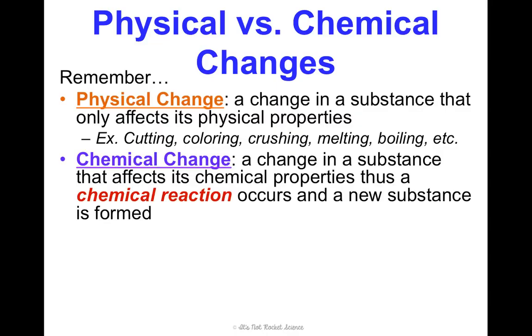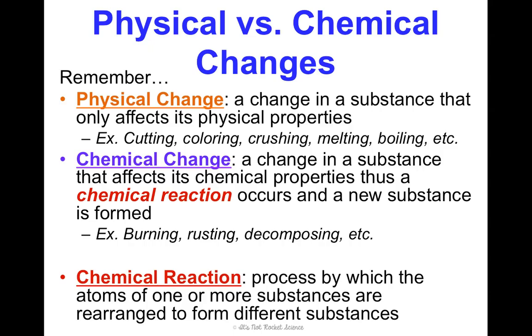Whereas a chemical change is a change in a substance that affects its chemical properties. So a chemical reaction is actually occurring and a new substance is formed. That's something like burning or rusting or decomposing. So now we're going to zoom in on those red words, on chemical reaction, to really understand what that means. A chemical reaction is a process by which the atoms of one or more substances are rearranged to form different substances.